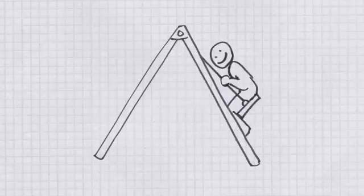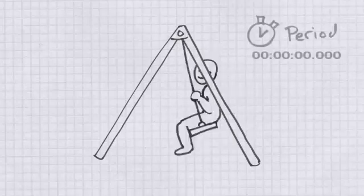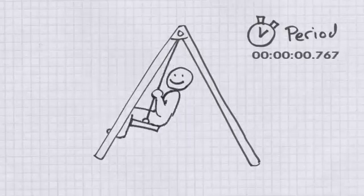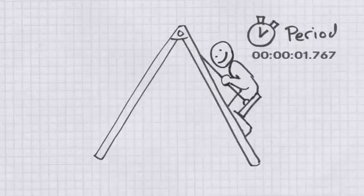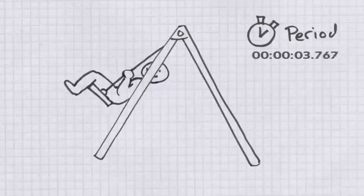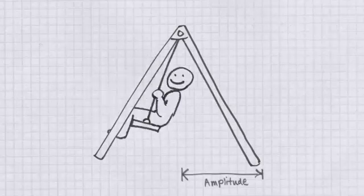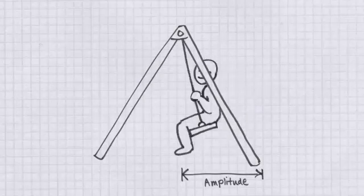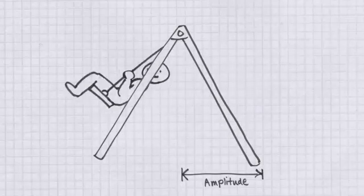For example, the term period refers to the time it takes the moving object to complete one whole cycle. Amplitude refers to the maximum distance the object moves from the equilibrium position.